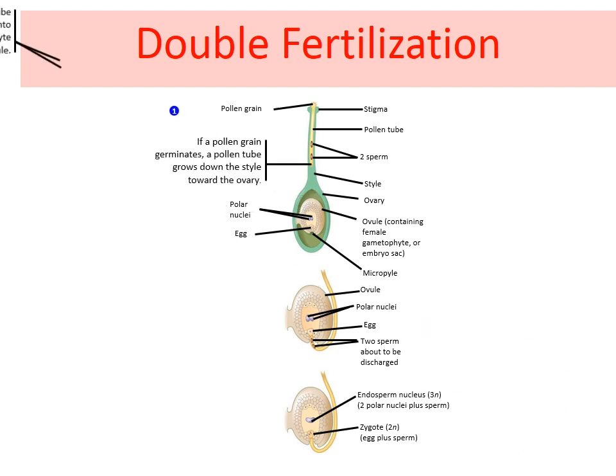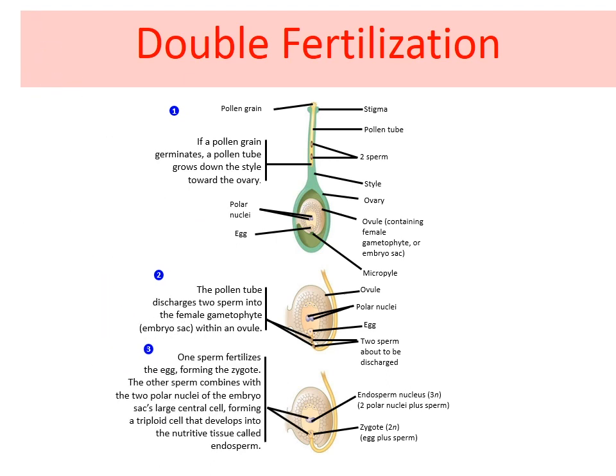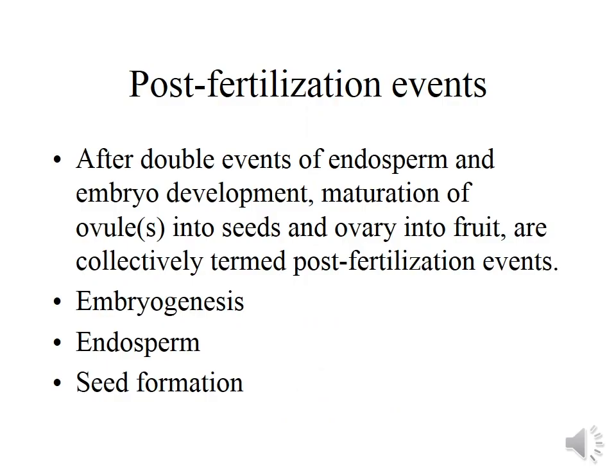Together, these two fertilizations — the zygote and endosperm — are known as double fertilization. After fertilization is complete, no other sperm can enter. The fertilized ovary becomes the fruit, usually developing the seed.